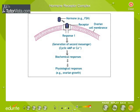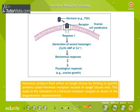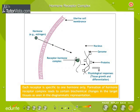Hormones produce their effect on target tissues by binding to specific proteins called hormone receptors, located in target tissues only. This leads to the formation of a hormone-receptor complex, as shown in the diagrammatic representation. Each receptor is specific to one hormone only.